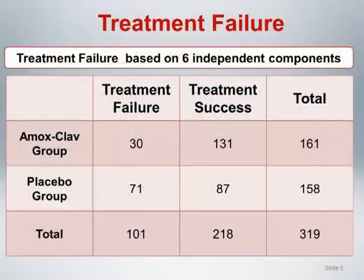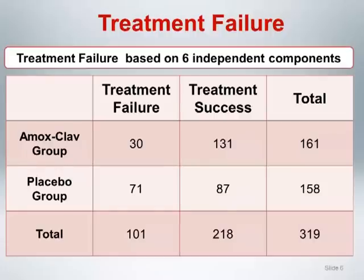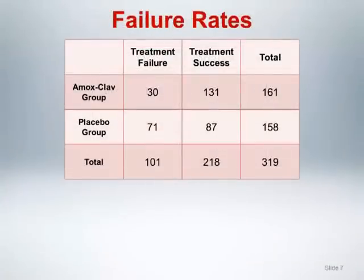Rather than focusing on the time to treatment failure, let's look at a related outcome also reported in the paper: whether or not treatment failure occurred within the 7-day window of treatment. This outcome is dichotomous and is summarized using a two-way frequency table. The rows display counts associated with each intervention arm, while the columns provide summary information about treatment failure and treatment success. The last row and column contain marginal frequencies, and the lower right cell contains the overall count of evaluable subjects.